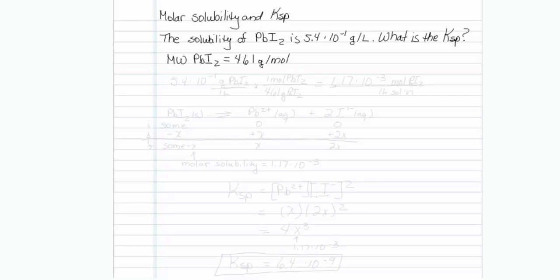This is another video about how molar solubility and KSP are related. The solubility of lead iodide is 5.4 times 10 to the minus 1 grams per liter. What is the KSP?